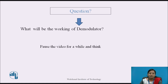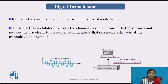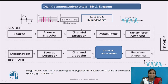Now the question: what is the working of the demodulator? We have seen that the modulator modulates a carrier signal according to the input — it adds a carrier signal. The digital demodulator reverses this process by removing the carrier signal. It processes the channel-corrupted transmitted waveforms and reduces them to a sequence of numbers representing estimates of the transmitted data signal. The output of the digital demodulator is a digital signal — binary data bits and redundant bits.